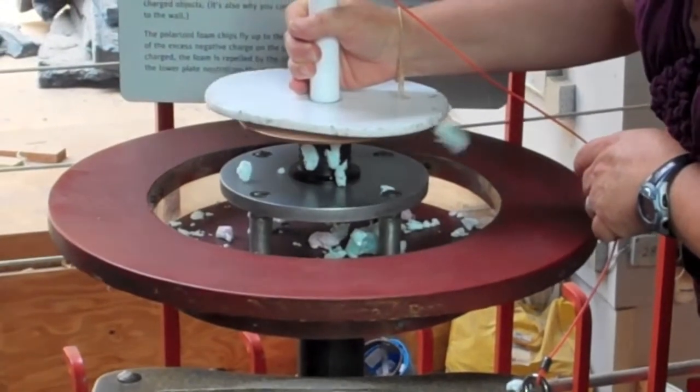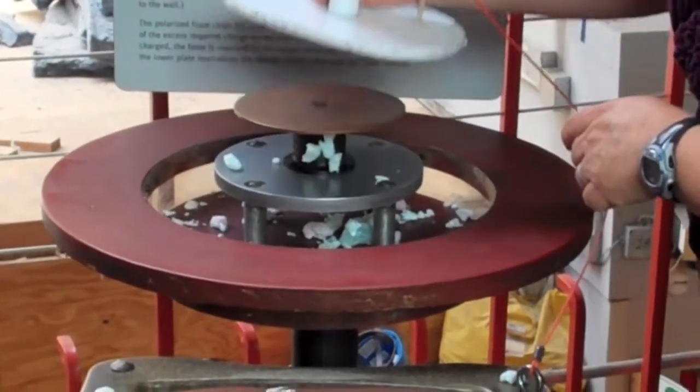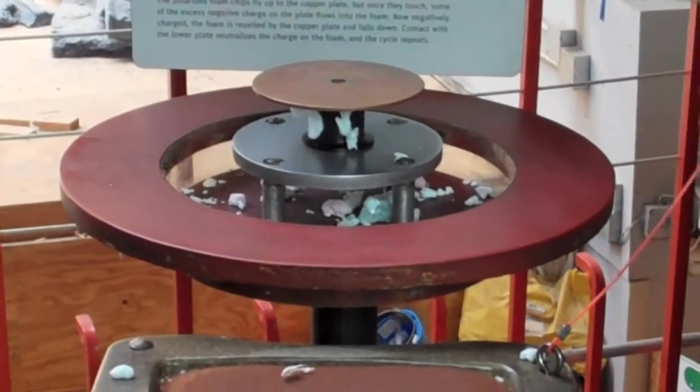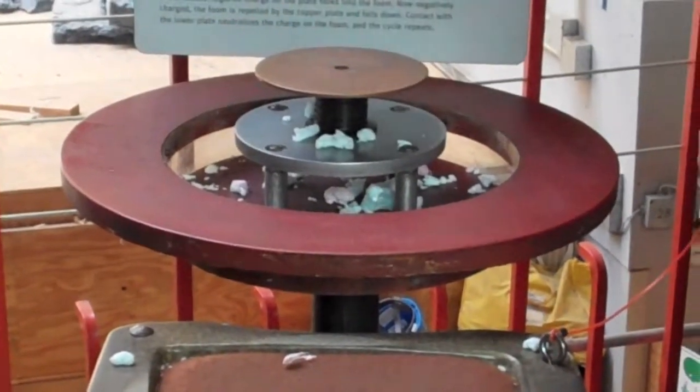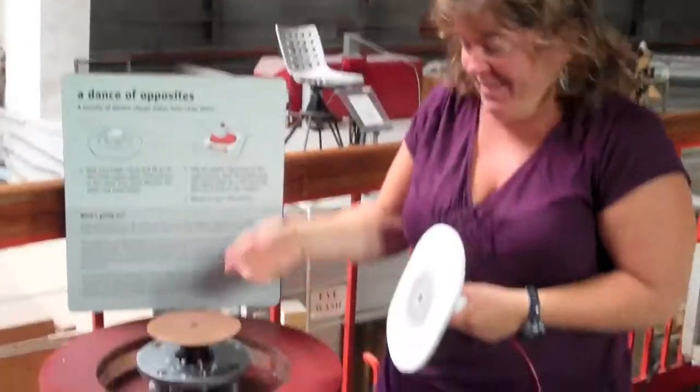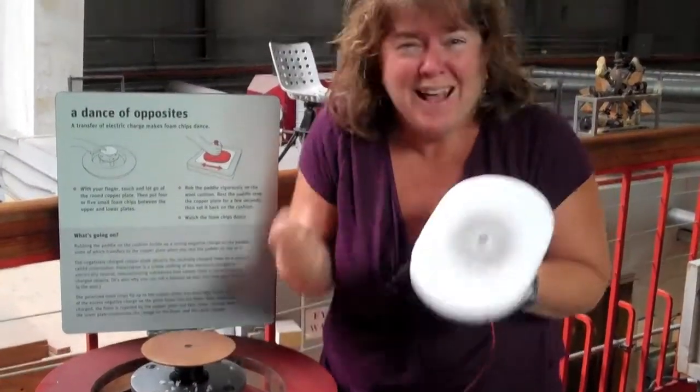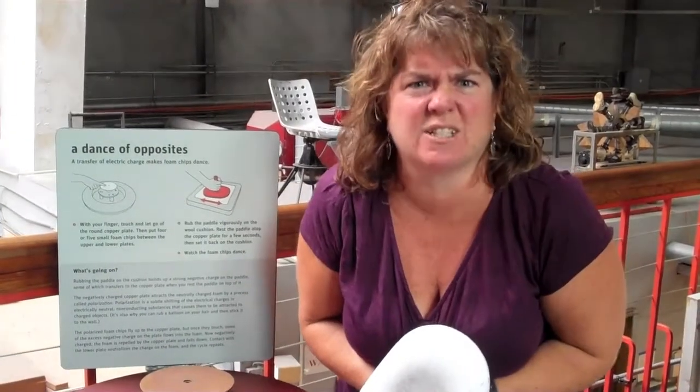Then I'm going to touch the copper plate with the Teflon paddle, remove it. You'll see them continue to move, but then I put my finger on the plate and they will fall down. Did you see those things go? They jumped up and then they came back down again. So cool! Science rules!